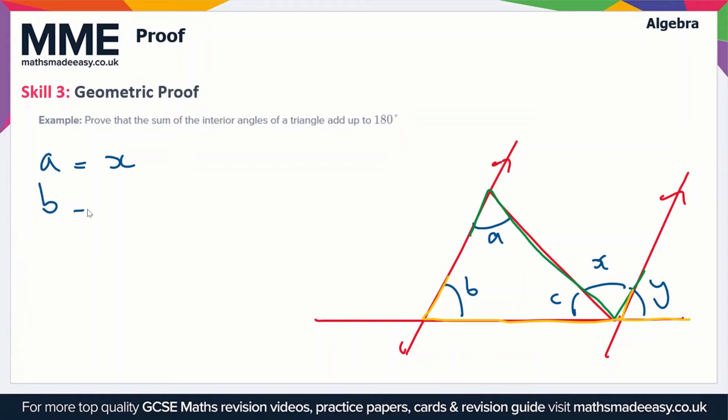The final thing we can pick up on is that c plus x plus y is 180 degrees, and that's because these are angles on a straight line. We now have three expressions: a equals x, b equals y, and c plus x plus y equals 180 degrees.